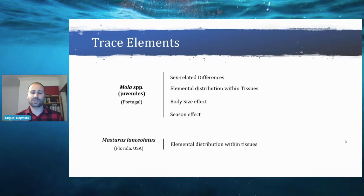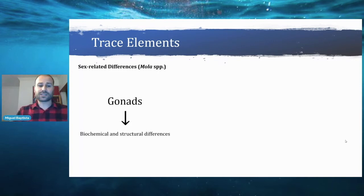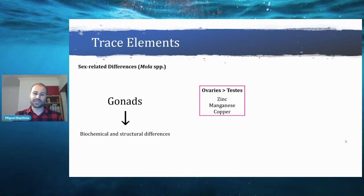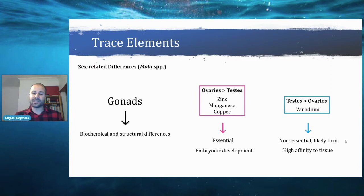Regarding Mola species, we'll discuss sex-related differences, elemental distribution within tissues, body size effects, and seasonal effects. Regarding Masturus, we'll discuss elemental distribution within tissues. In terms of sex-related differences, differences were only found in the gonads, likely because ovaries and testes have biochemical and structural differences. In ovaries, zinc, manganese, and copper were found in higher concentration than in testes — expected results since these are essential elements important for embryonic development. In testes, vanadium was found in higher concentration; it's non-essential but likely has high affinity to the tissue.